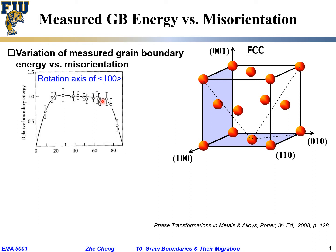Beyond a certain angle, the grain boundary arrangement is so disordered that it doesn't matter how much more the two grains are misaligned — the energy stays roughly constant from about 15 all the way to around 75 degrees. When the misorientation approaches 75 degrees and beyond, the energy drops again, because at close to 90 degrees the crystal symmetry causes the grains to overlap again. So at 90 degrees it drops to zero, giving a linear decrease from 75 to 90 degrees, consistent with the 90-degree rotational symmetry of the FCC structure.